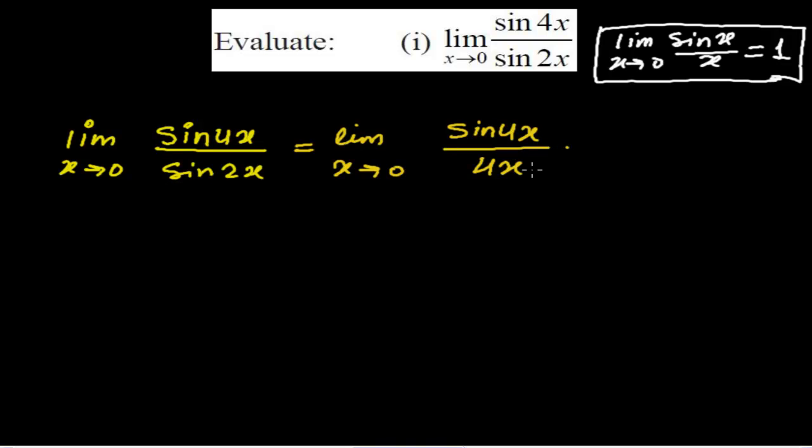And again, here is sin 2x. So again, I am writing 2x, 2x divided by sin 2x. Now see, here is sin 4x in the numerator and sin 2x in the denominator. I write 4x in the denominator myself.